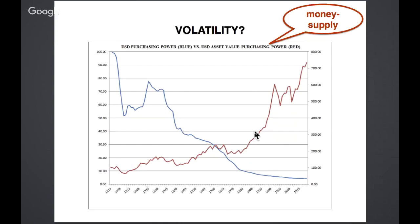Bitcoin is a hedge — a protection against inflation — as much as it is an opportunity to transform your wealth. Five to ten percent of your total wealth in gold and silver is ideal, and then whatever you deem suitable as a risk allocation into Bitcoin on top of that.